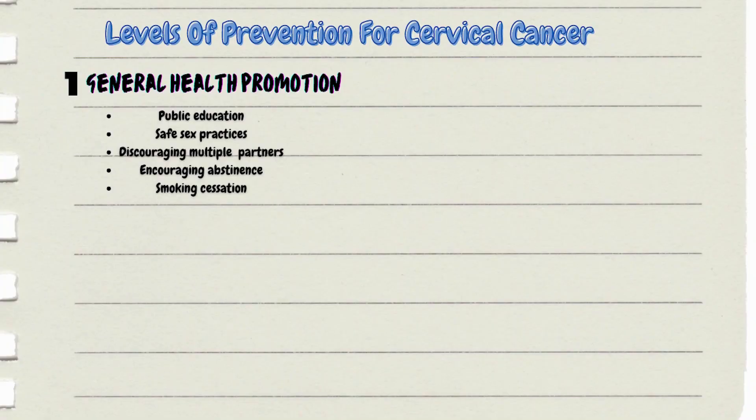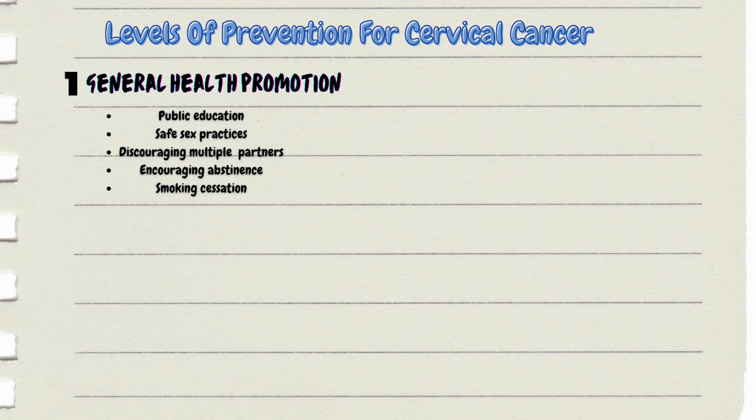The first case is cervical cancer. Under general health promotion, number one is always public education — the public needs to be educated about cervical cancer, its modes of transmission, early symptoms, how it can be diagnosed and treated. We can also include promoting safe sex, discouraging multiple sex partners, and encouraging abstinence in young girls — all under general health promotion.